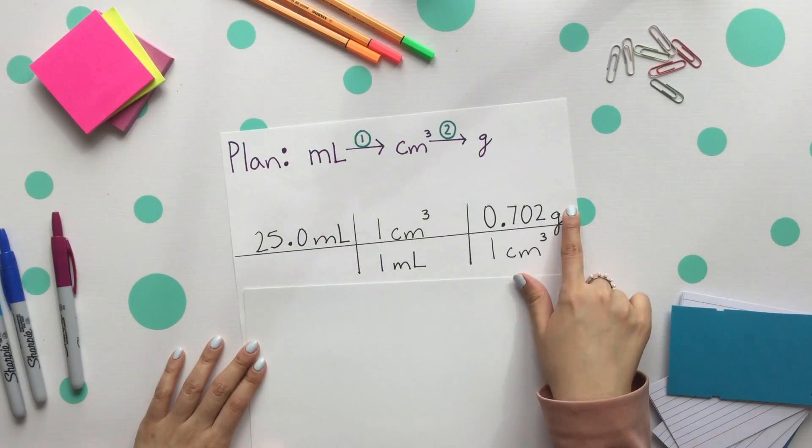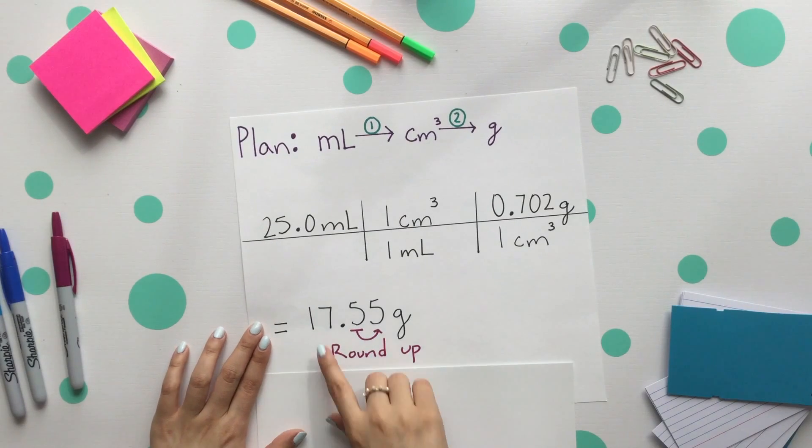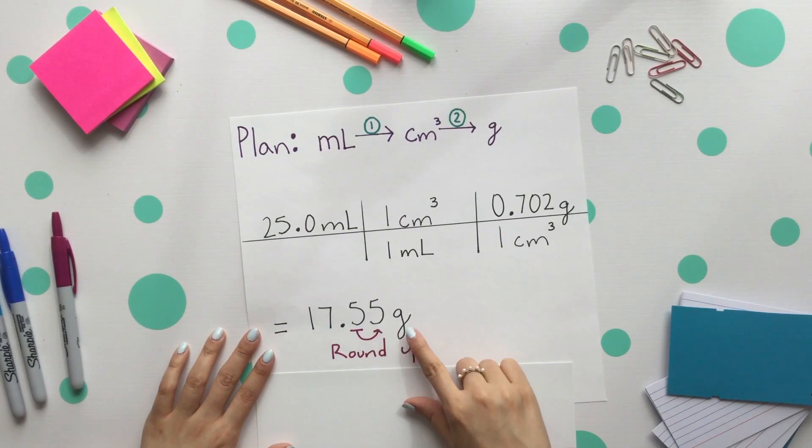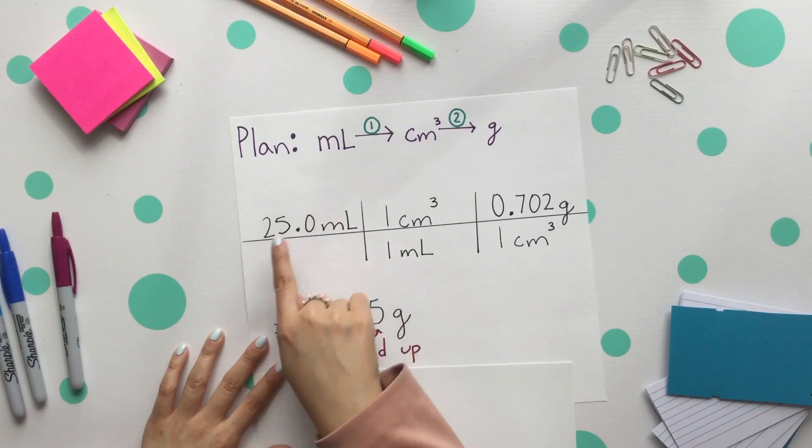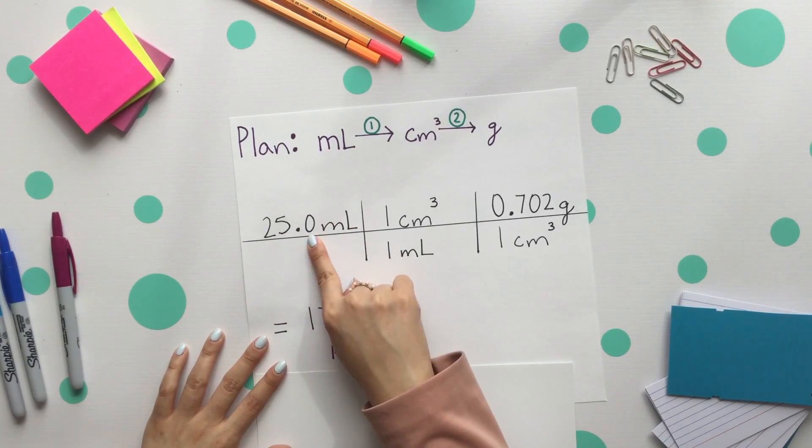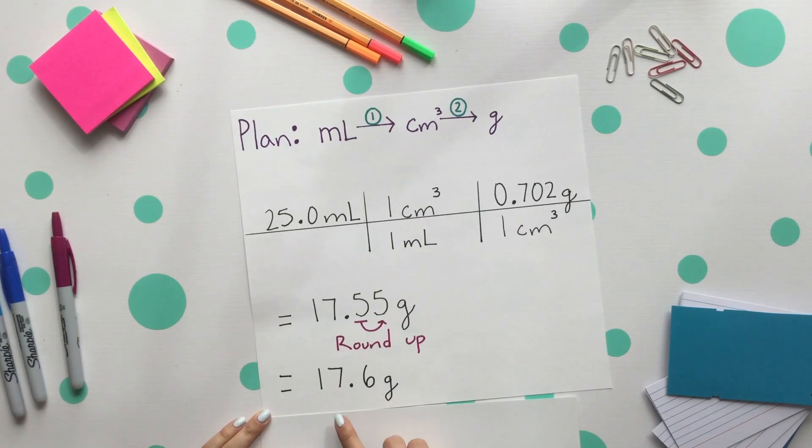Multiply straight across and divide by one. You get 17.55 grams. However, we have three sig figs since our given was one, two, three significant figures. We'll round this five on up and our final answer is 17.6 grams.